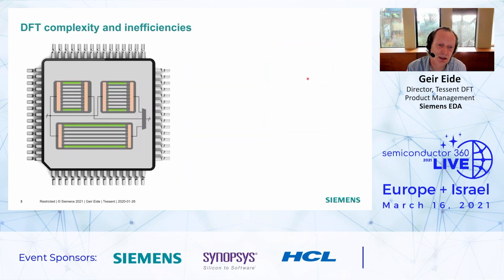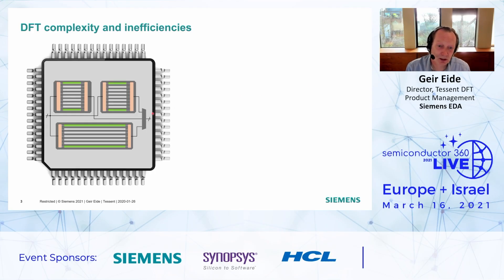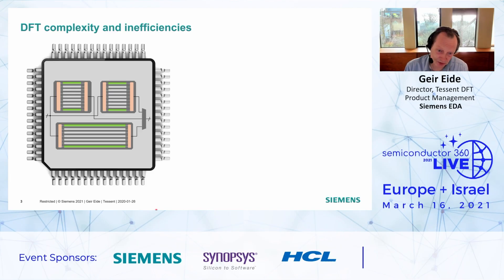Most designs today are implemented with some sort of hierarchical DFT approach, as shown in this simple drawing — a hierarchical approach where testability, DFT insertion, and pattern generation is done at the block or core level. Then at chip level, we connect the core-level test pins to chip-level pins. This is usually done through a pin-muxed approach, and then the patterns are retargeted. But now, with significant increases in complexity, even this approach is running out of steam.